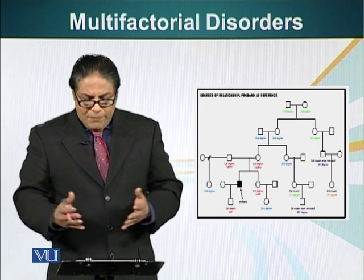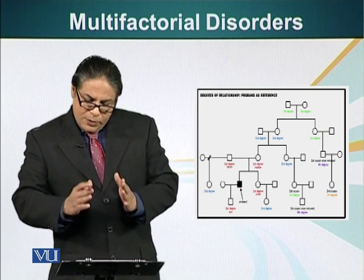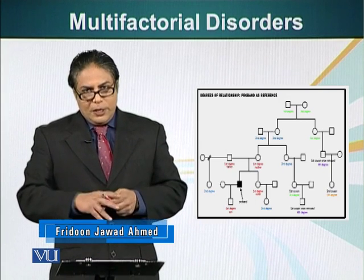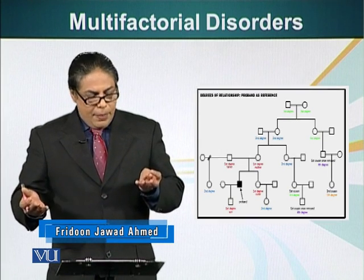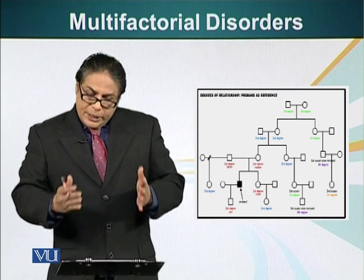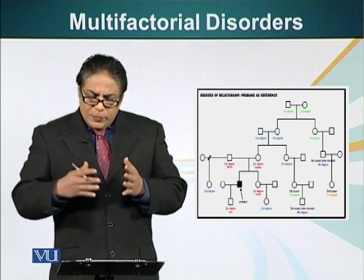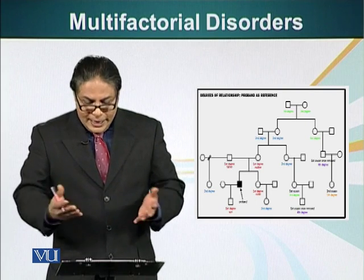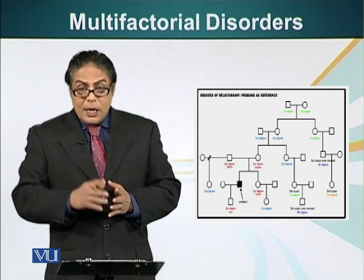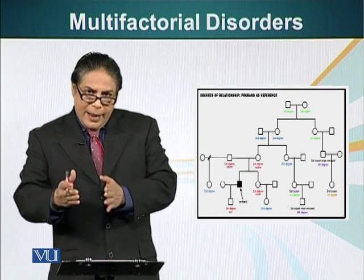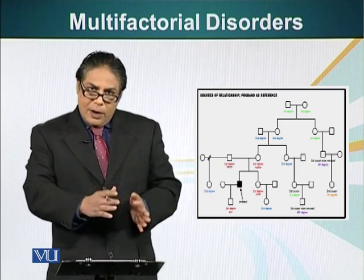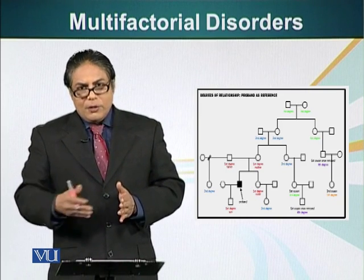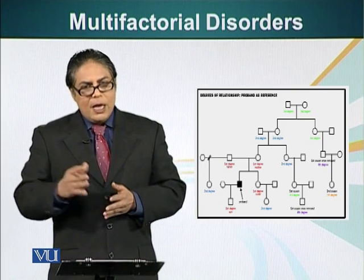Here on the screen you can see a pedigree which tells us the degree of relationship. First-degree relatives are those with whom we share 50% of our genes — our parents, brothers and sisters, and our children. Second-degree relatives are those with whom we share 25% of our genes, including grandparents and blood aunts and uncles — not by marriage, but by blood relationship. Third-degree relatives share 12.5% of our genes, and so on.